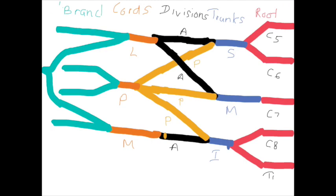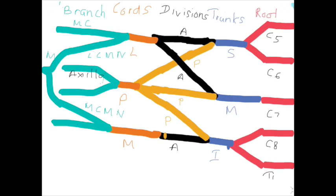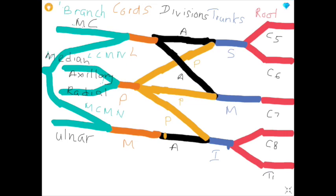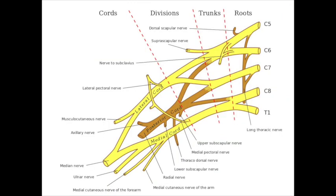Carefully look at the labeling of branches. This is the lateral root of the median nerve. This is the medial root of the median nerve. Those two nerves combine and form the median nerve. This is the radial nerve. This is the ulnar nerve. This is the musculocutaneous nerve. This is the median nerve. This is the general structure of the brachial plexus.